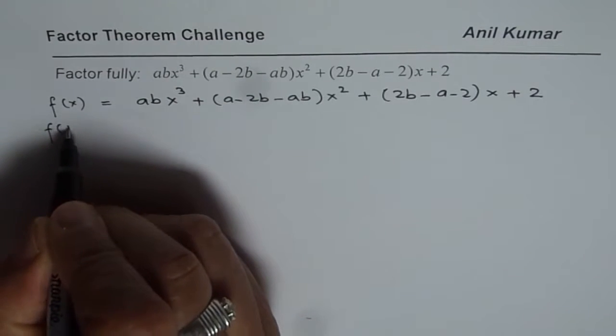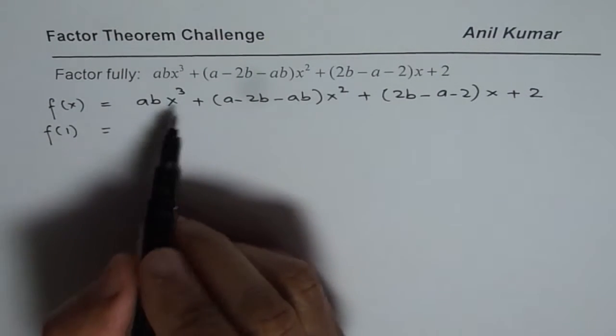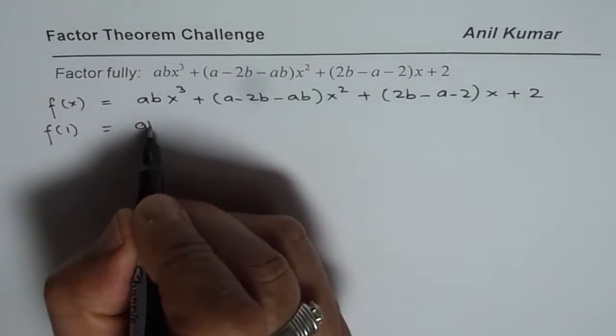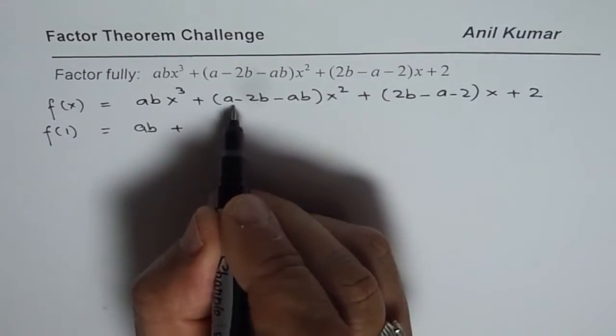Let us try the value x = 1 first. f(1) gives us ab + (a − 2b − ab) + (2b − a − 2) + 2. The +2 and −2 cancel, the −a and +a cancel, the +2b and −2b cancel, and ab and −ab cancel. So we get f(1) = 0.